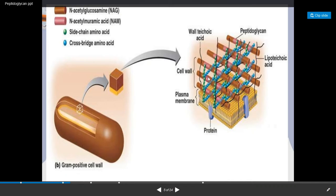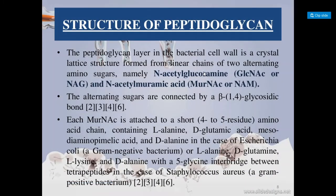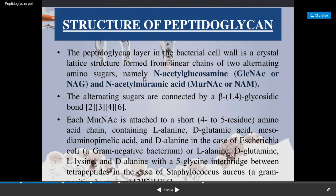The blue colored pentaglycine cross bridge and the green tetrapeptide side chains are visible in the diagram. The peptidoglycan in the bacterial cell wall forms a crystal lattice made up of chains of two alternating amino sugars: N-acetylglucosamine (written as GlcNAc or NAG) and N-acetylmuramic acid (written as MurNAc or NAM). These two amino sugars are the basic units of the peptidoglycan layer, present in an alternating manner and connected by the beta-1,4 glycosidic bond.